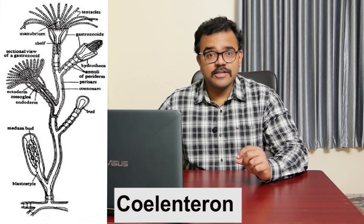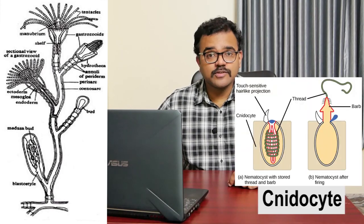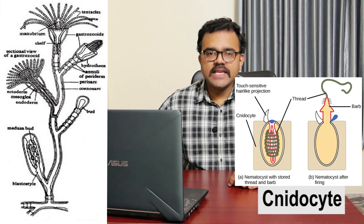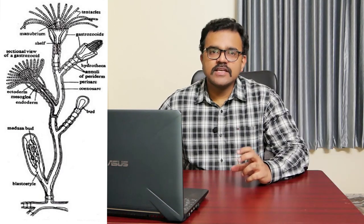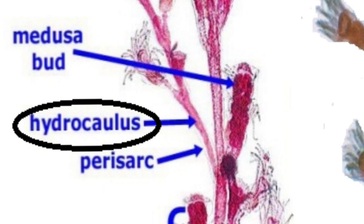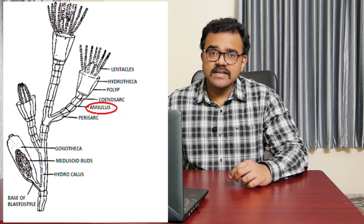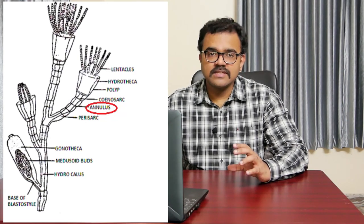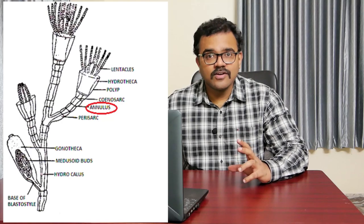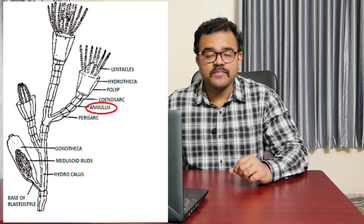Obelia possesses nematocysts that contain nematocysts. The tentacles of Obelia are solid and contain a core of endoderm cells. The perisarc or periderm is a cuticle-like, transparent, noncellular layer secreted by the ectoderm of the coenosarc. The perisarc is separated from the coenosarc at certain places, and constrictions can be seen because of this attachment; these constrictions are called annulae of perisarc or periderm.